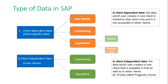What type of data does SAP have? There are two types: client dependent data and client independent data. Client dependent data is data that users or consultants create in one client - such as master data and customizing - and it is limited to that client only. It is not accessible in other clients.